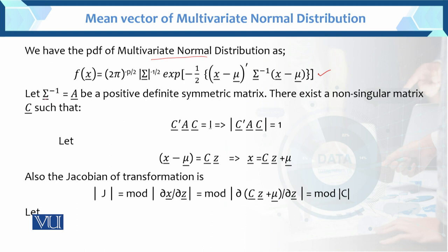Let Sigma inverse equals to A. This is the positive definite symmetric matrix — uski property hai. There exists a non-singular matrix C such that C prime AC which is equals to identity matrix. Aur modulize agar iska lenge which is equals to 1.